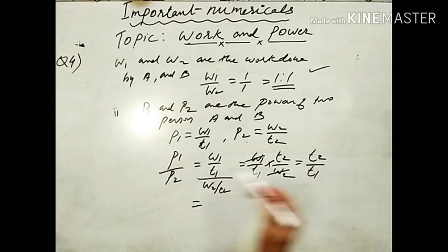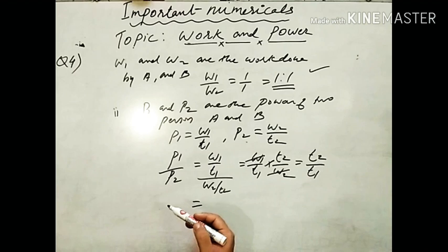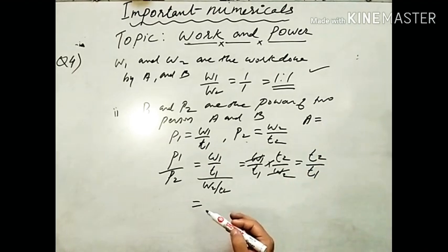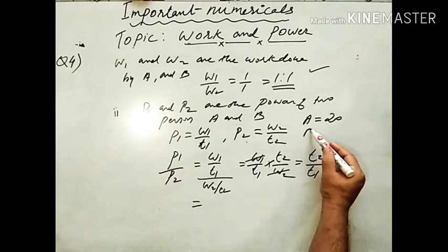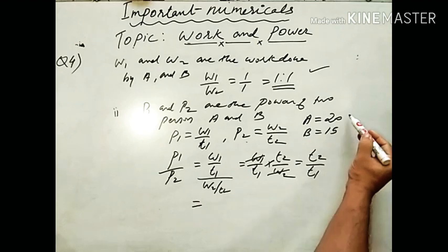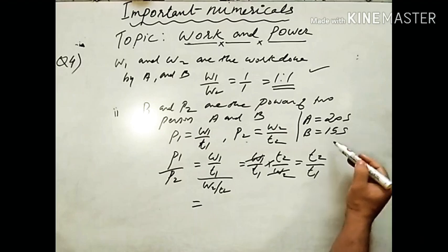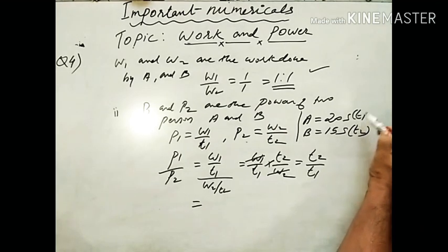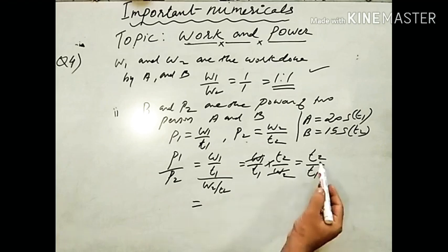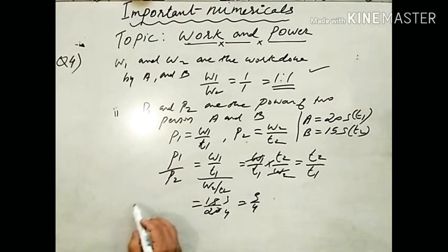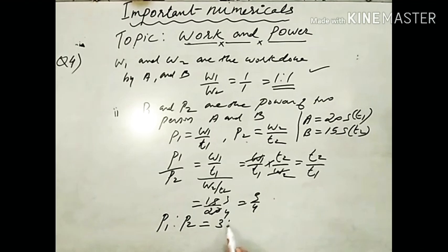Person A takes T1 = 20 seconds and person B takes T2 = 15 seconds. So P1/P2 = T2/T1 = 15/20 = 3/4. Therefore P1 : P2 = 3 : 4.